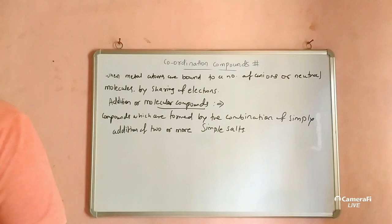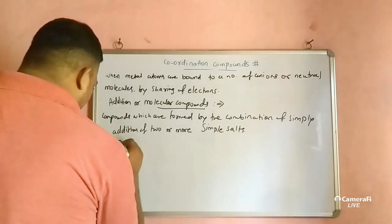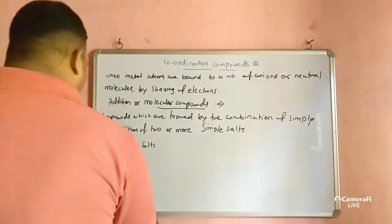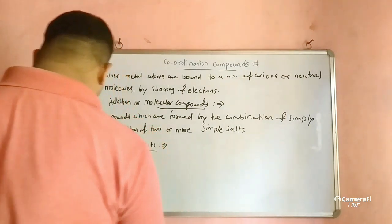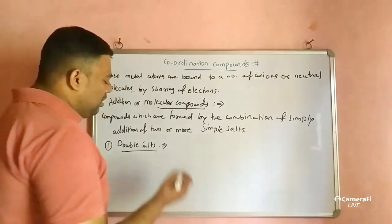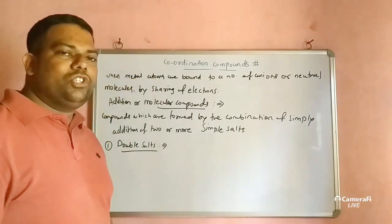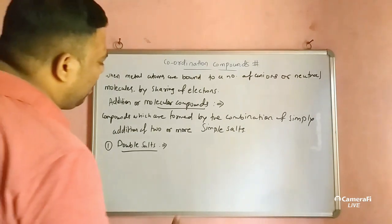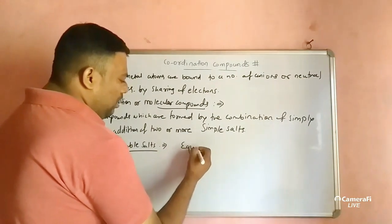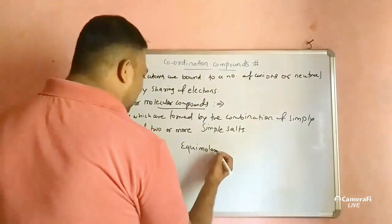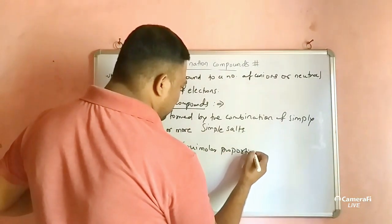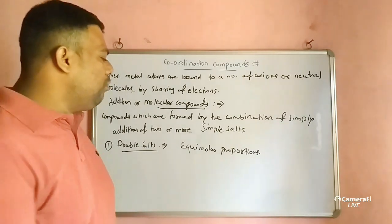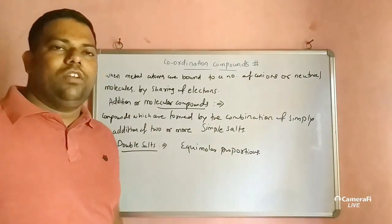We can classify addition compounds as double salts. Double salts are formed by the combination of two or more simple salts in equimolar proportion. Equimolar means similar moles in proportion.